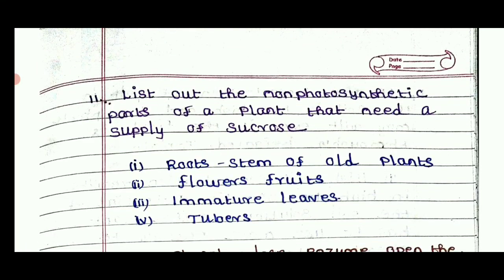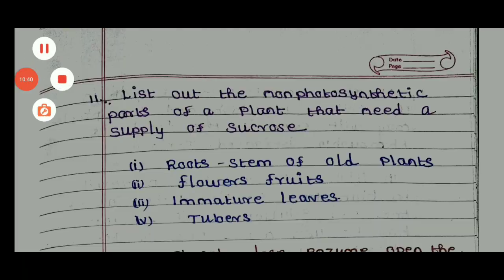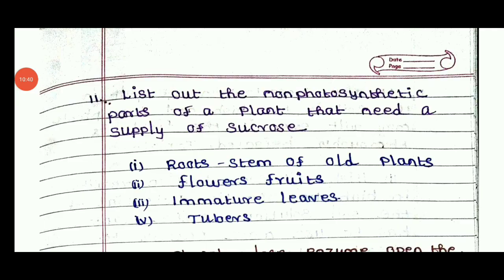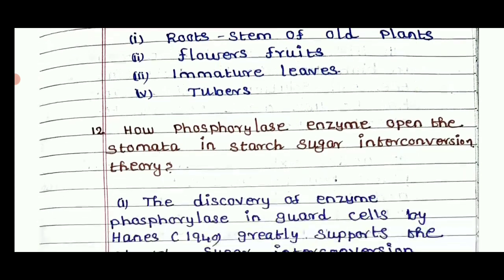List out the non-photosynthetic parts of plants that need supply of sucrose. Here we have 4 points: root stems of old plants, flowers, fruits, immature leaves, and tubers. So this is how we can answer this question.